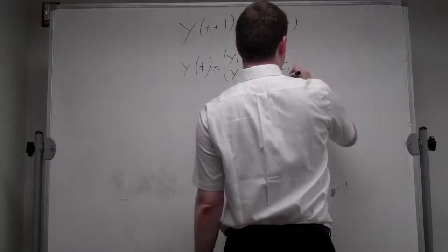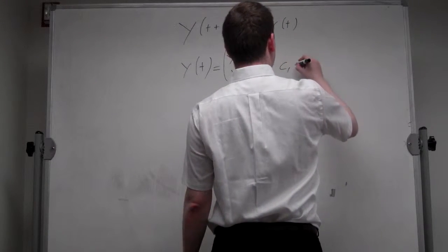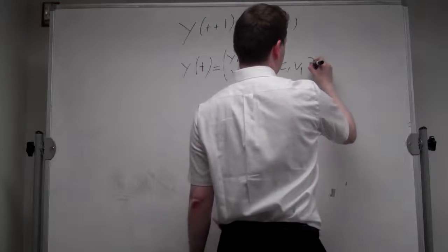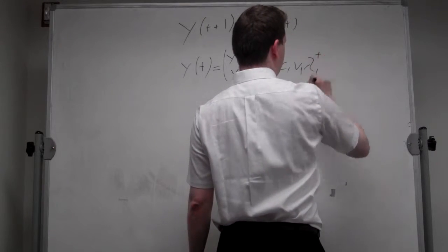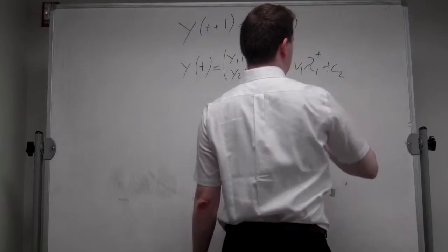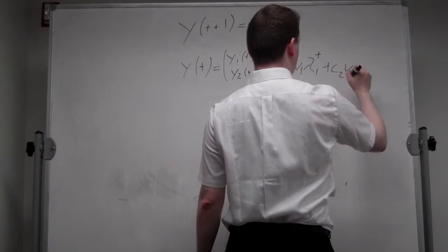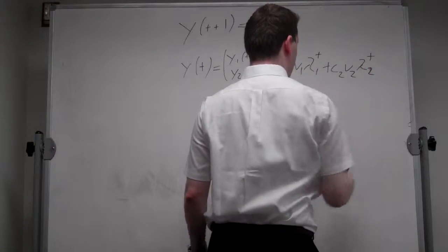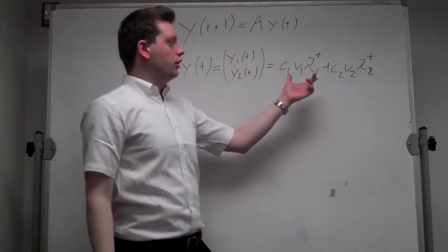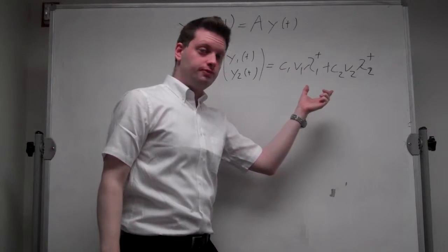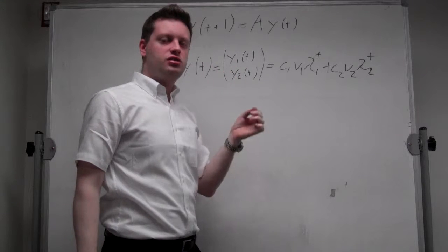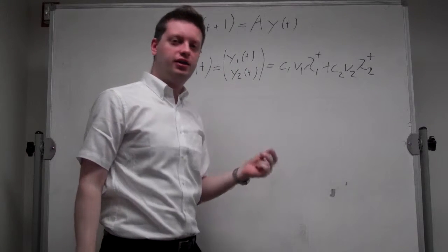is equal to some constant times the first eigenvector times the first eigenvalue to the power of t plus some second constant times the second eigenvector times lambda_2 to the power of t.